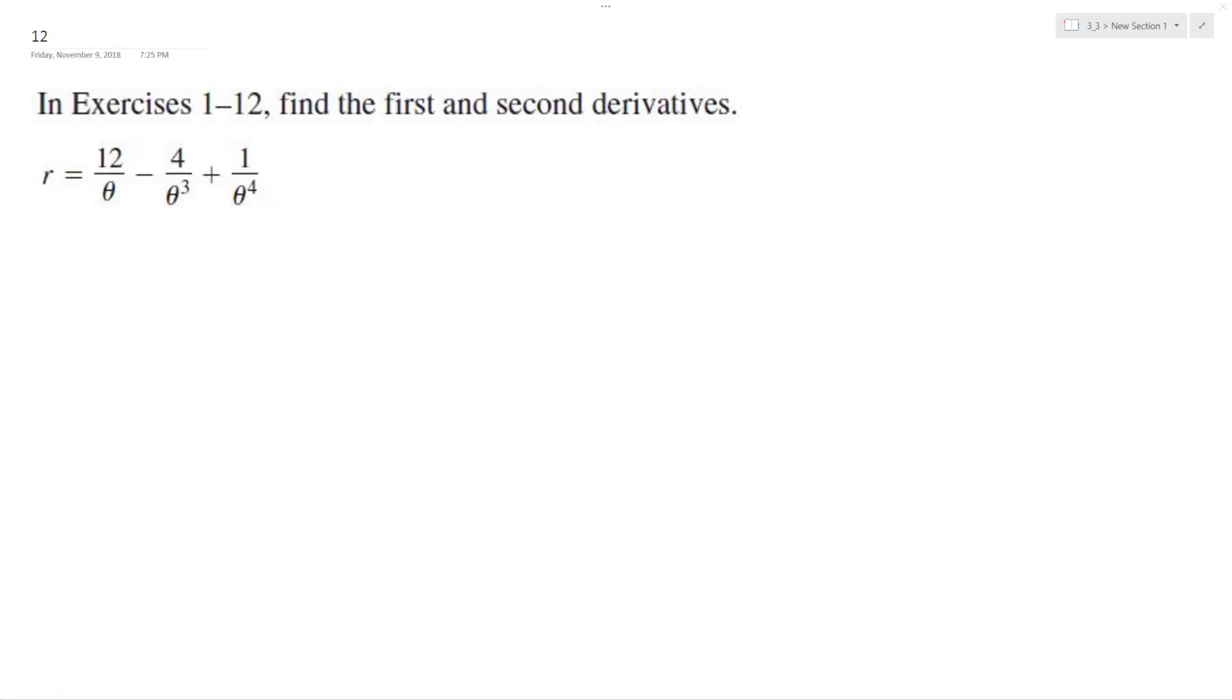So we want to find the first and second derivative of this, and I'm actually going to rewrite this as 12 theta raised to negative 1. You can think of theta as just x in this case, minus 4 theta raised to the negative 3rd, or negative 3rd I mean, and then plus theta raised to the negative 4th.